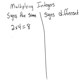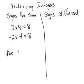The same thing happens when they're both negative. Negative 2 times negative 4. Same sign. The answer is positive. So when the signs are the same, the answer is positive.